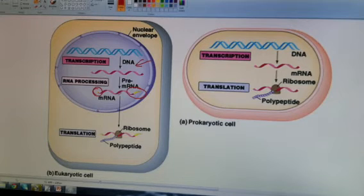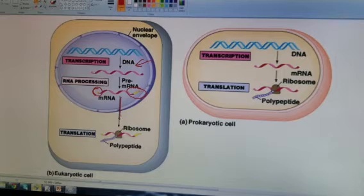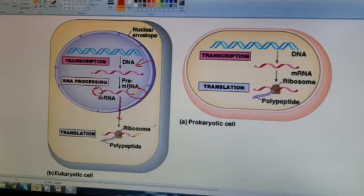The 5' cap and poly-A tail help prevent — or at least slow down — the breakdown of RNA by hydrolytic enzymes once it's in the cytoplasm. Then our messenger RNA leaves the nucleus and goes through a nuclear pore into the cytoplasm, where a ribosome will start the process of translation.